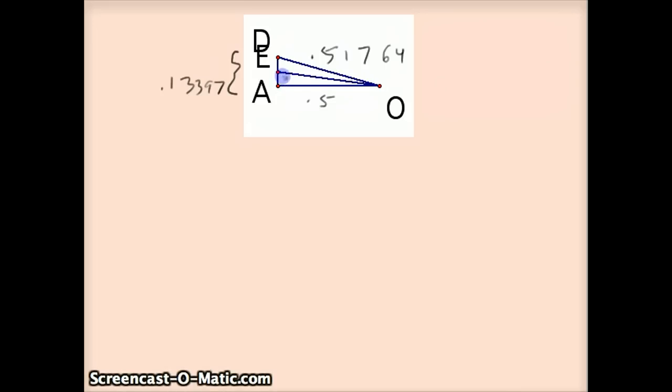Well, if I call AE X, since that's the thing I'm trying to calculate, then DE will be 0.13397 minus X. And the angle bisector theorem says that I can set up this proportion to solve for X.